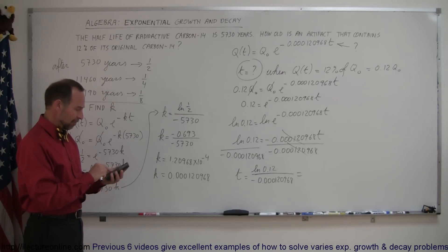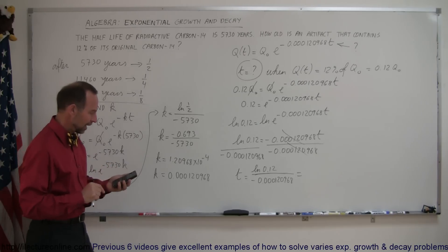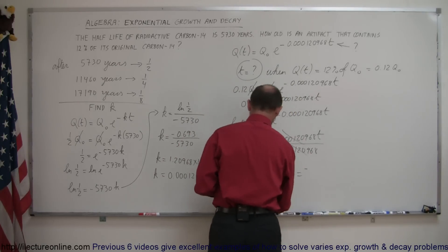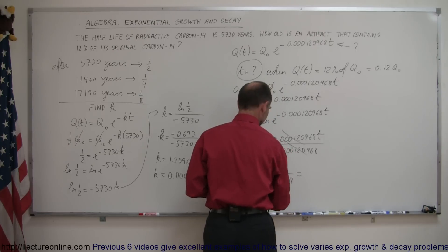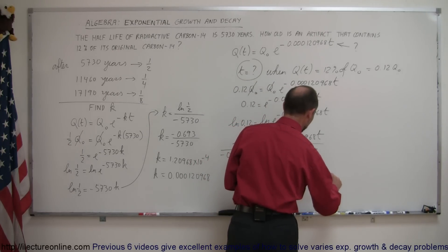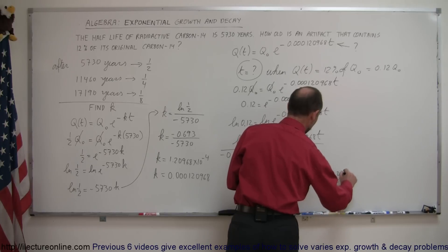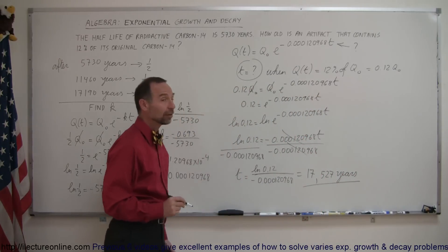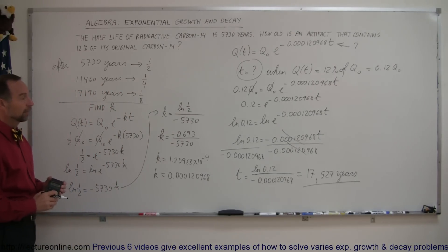So, we take the inverse of that, we multiply that times 0.12, take the natural log of that, and the answer is 17,527, of course, that's in years, because the time of the half-life was given in years. So, there's your answer, 17,527 years.